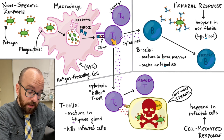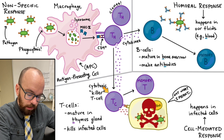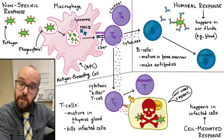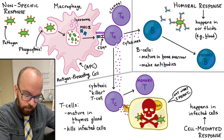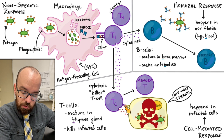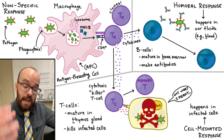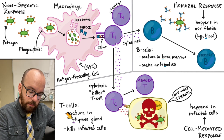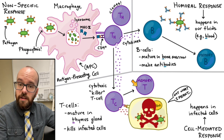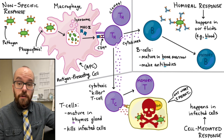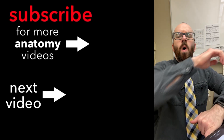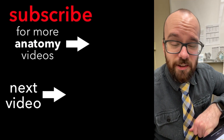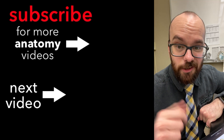For the cell-mediated response: T helper cells release cytokines to stimulate cytotoxic or killer T cells. Killer T cells detect antigens on the surface of infected cells, then release perforins to poke holes in the cell membrane and enzymes to destroy the cell, preventing the pathogen from replicating and spreading. T cells mature in the thymus gland — hence the name T. Memory T cells stick around so the body can fight this pathogen again without going through the whole process. So how convincing was my fake coughing? Thanks for watching, and good luck fighting off those pathogens!